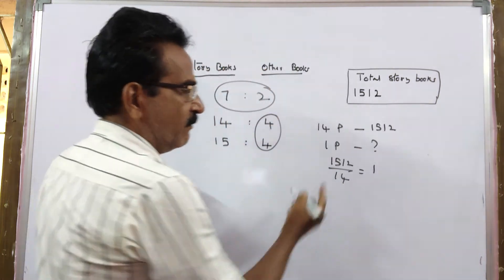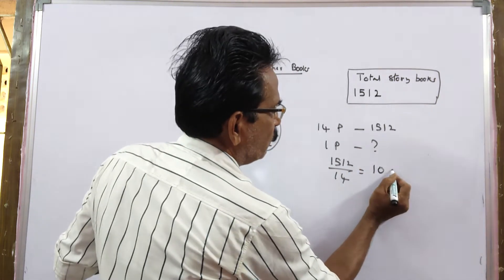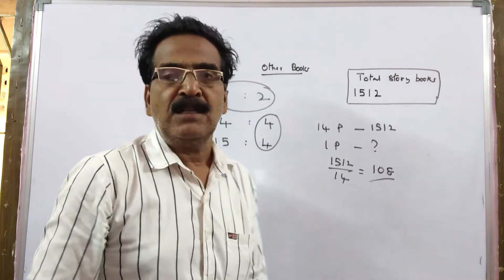14 into 15, 1, 0, 1, 12, 14, 8, 1, 12. So, your answer is 108 books.